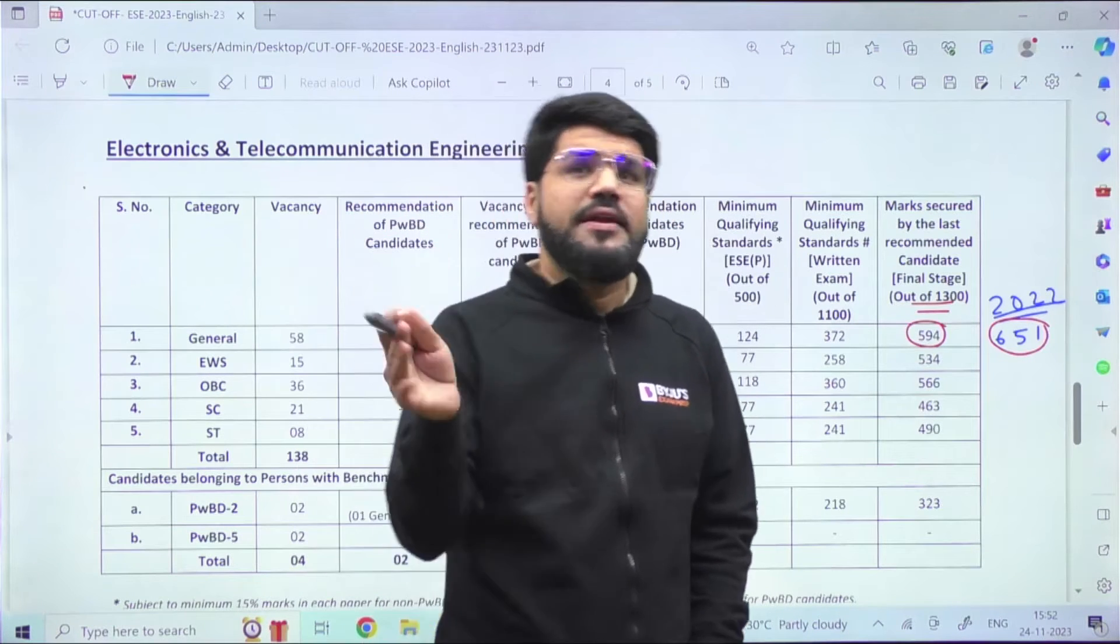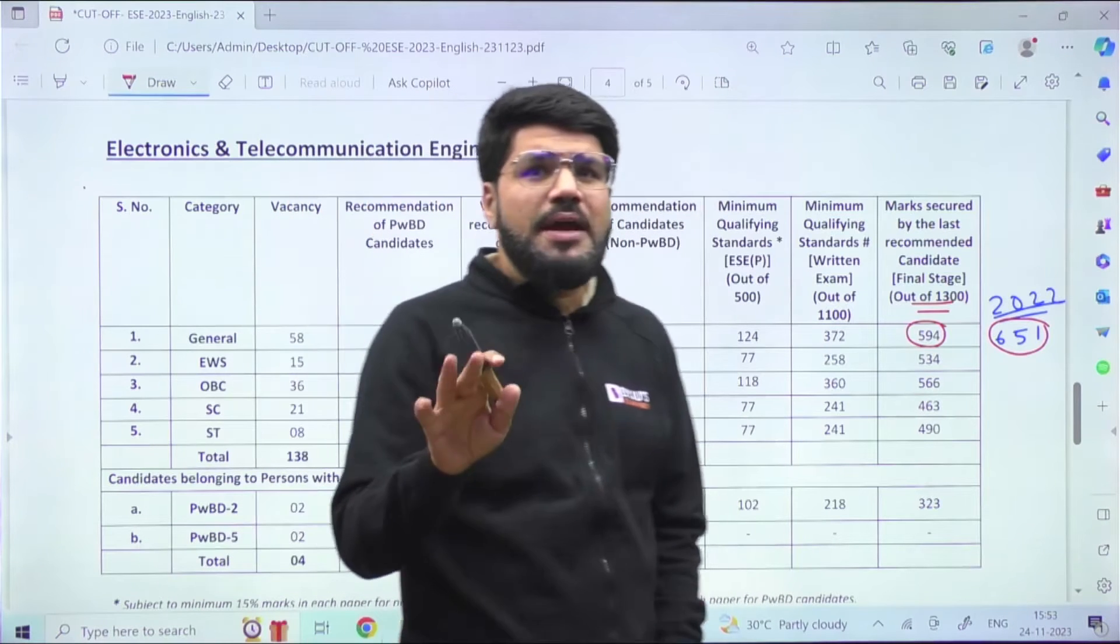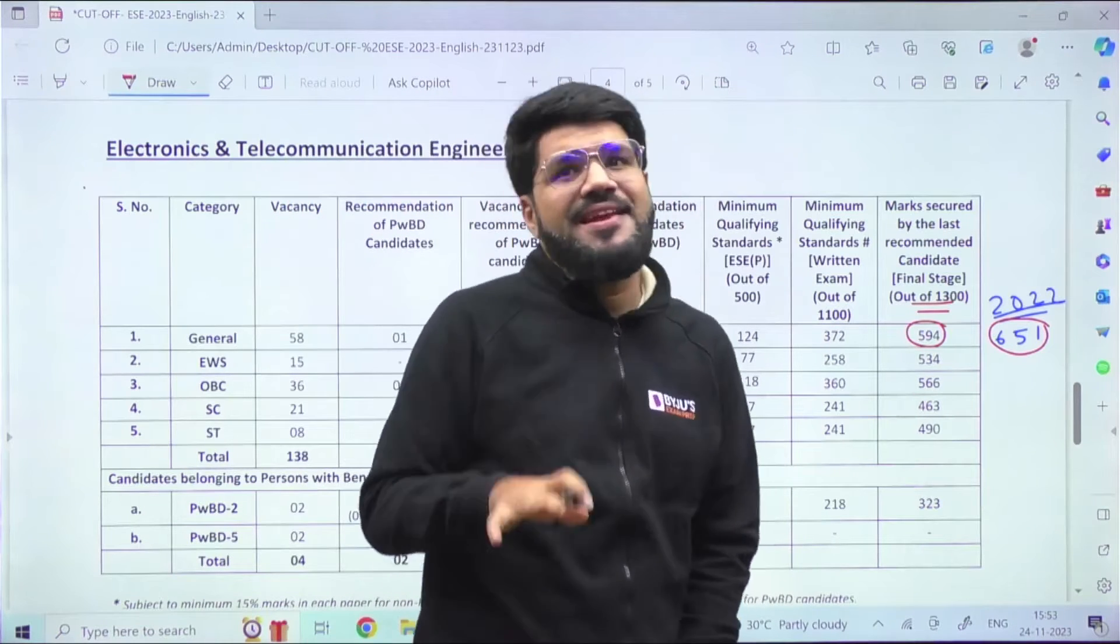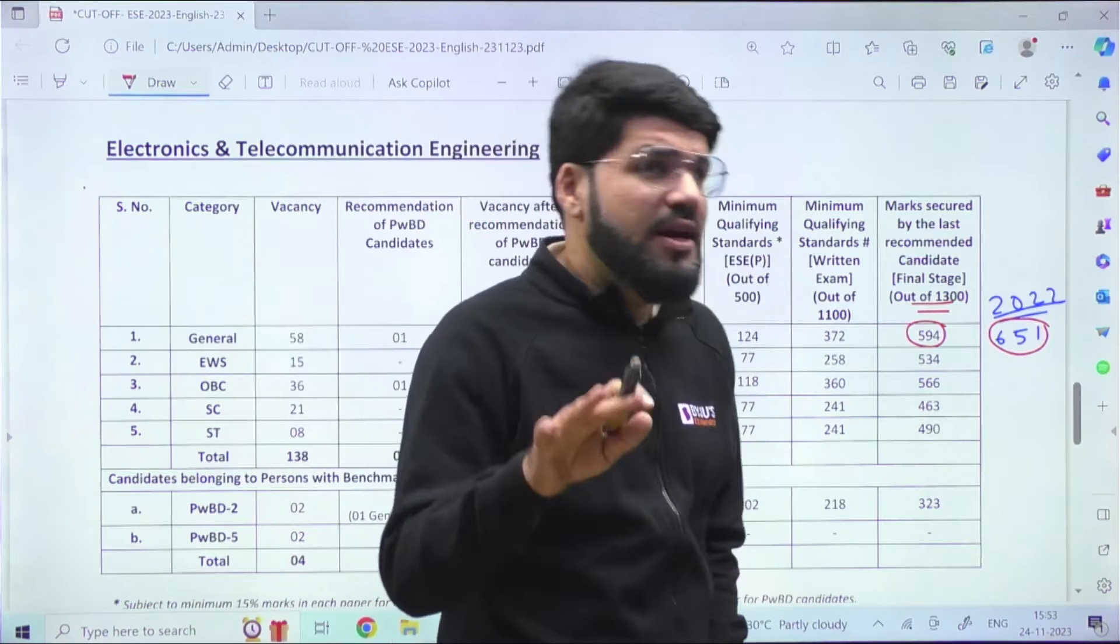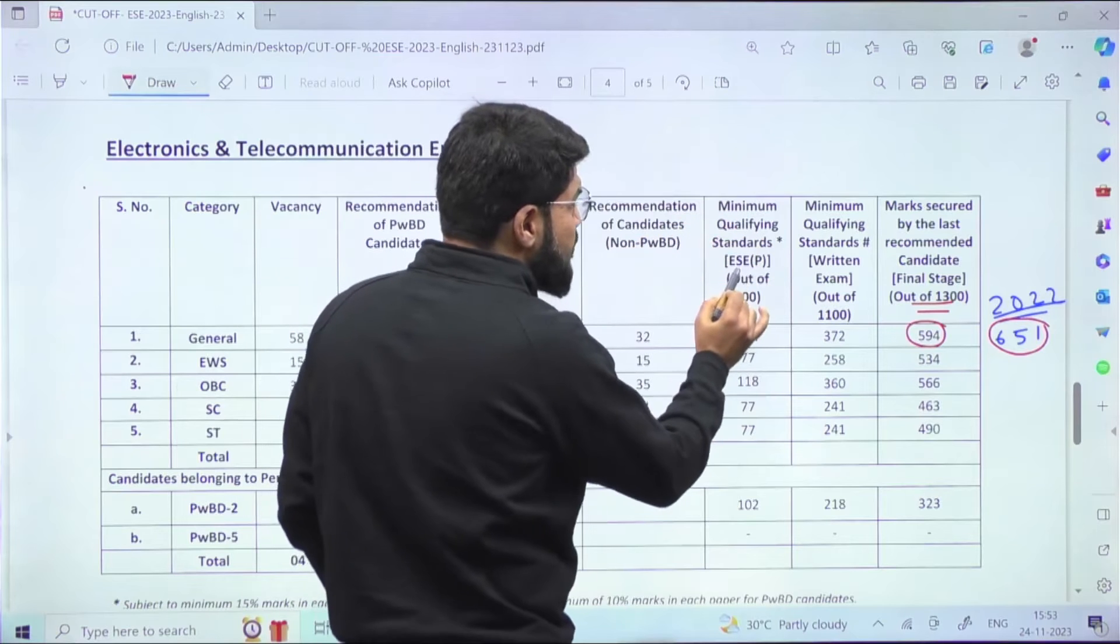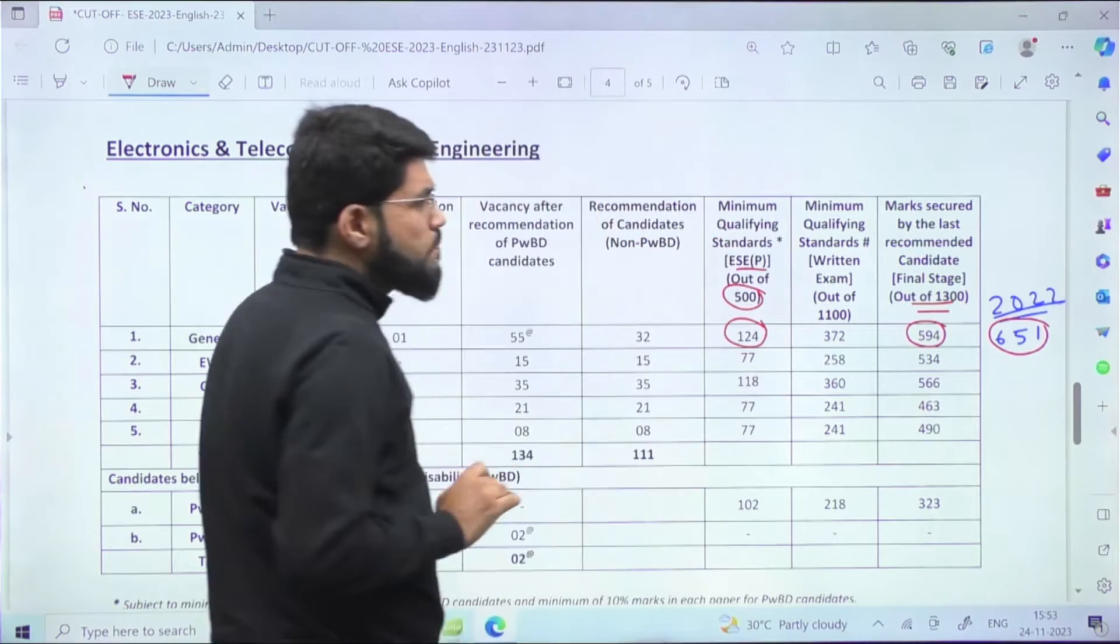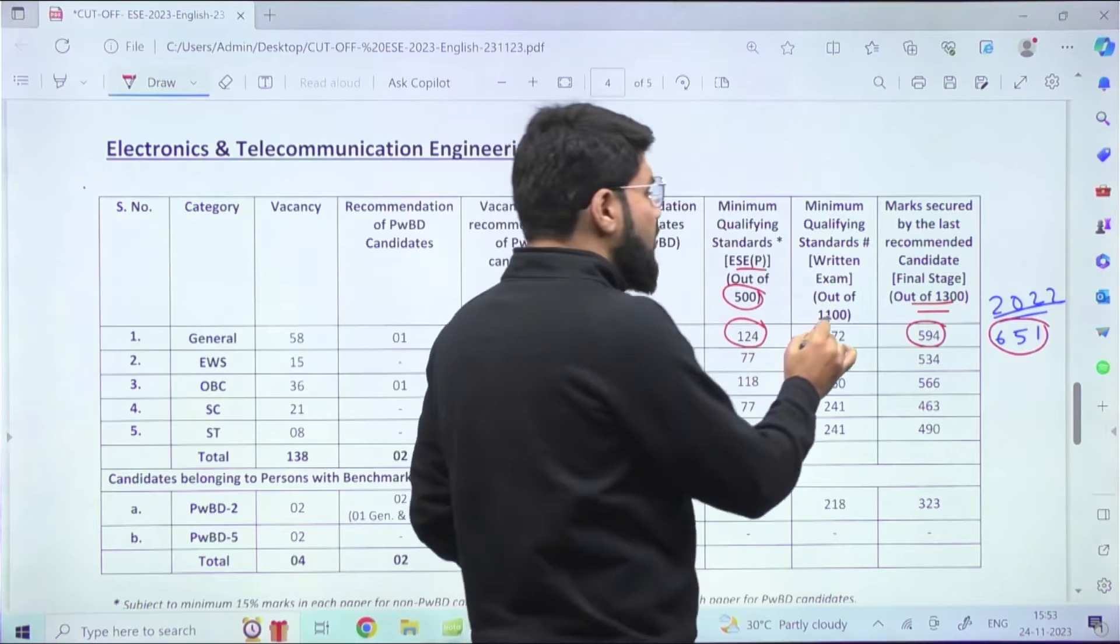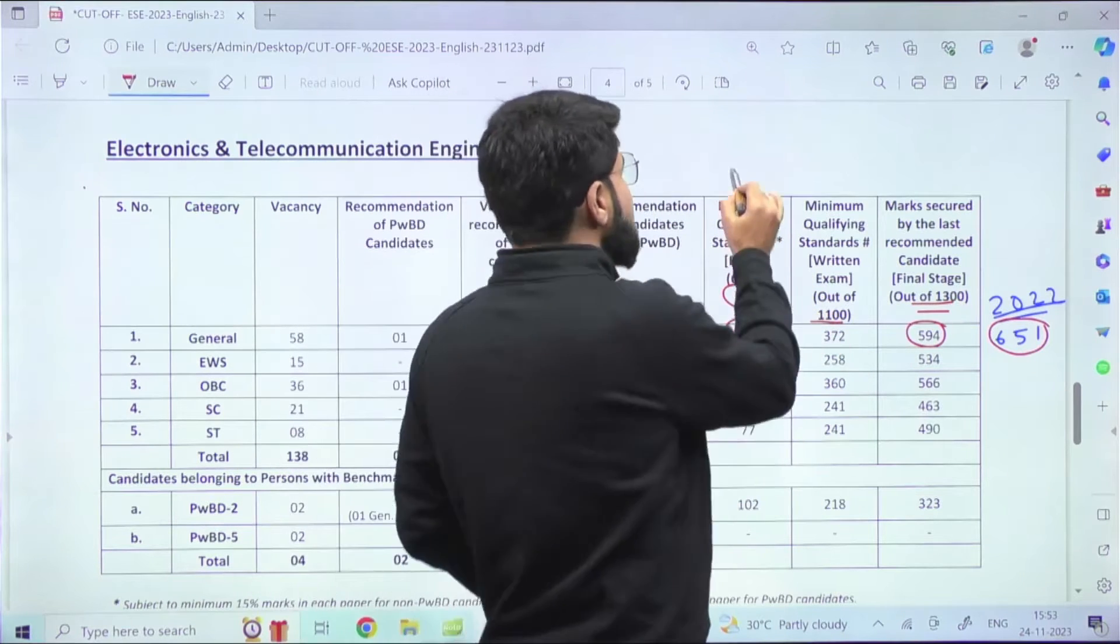Because of more number of candidates to be recruited, definitely the cutoff went low. Also, this year's paper, especially the prelims technical paper, was relatively difficult compared to last year. That's why you're able to see the minimum qualifying marks in the prelims paper out of 500 is only 124.